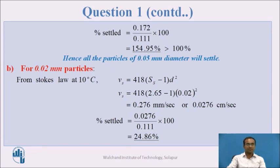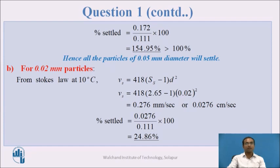For the second diameter, 0.02 mm particles, using the same equation, we find the settling velocity. With specific gravity 2.65 and diameter 0.02 mm, by putting into the formula, we get a settling velocity of 0.0276 centimeter per second. The percentage settled comes to 24.86%. This means only 24.86% of the 0.02 mm diameter particles will get settled, and the remaining will flow out from the settling tank.